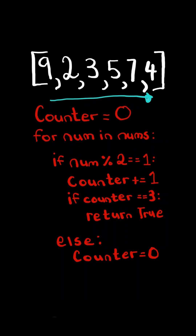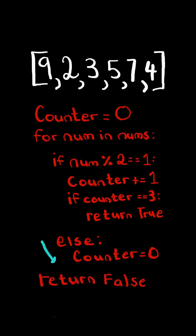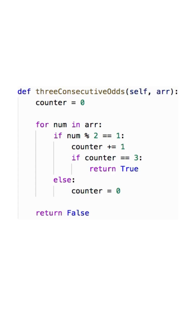Suppose we go through the list, and the counter never hit three, in which case we return false. And here is the code to do so.